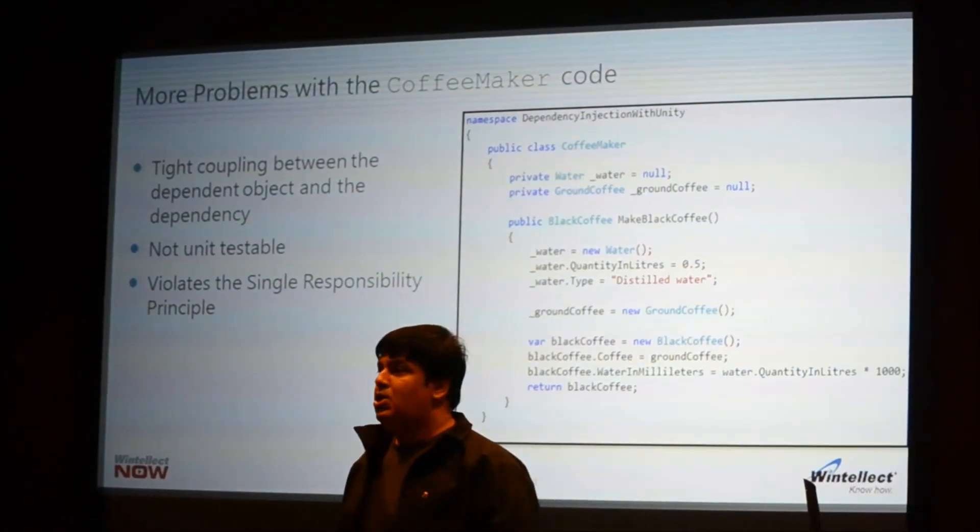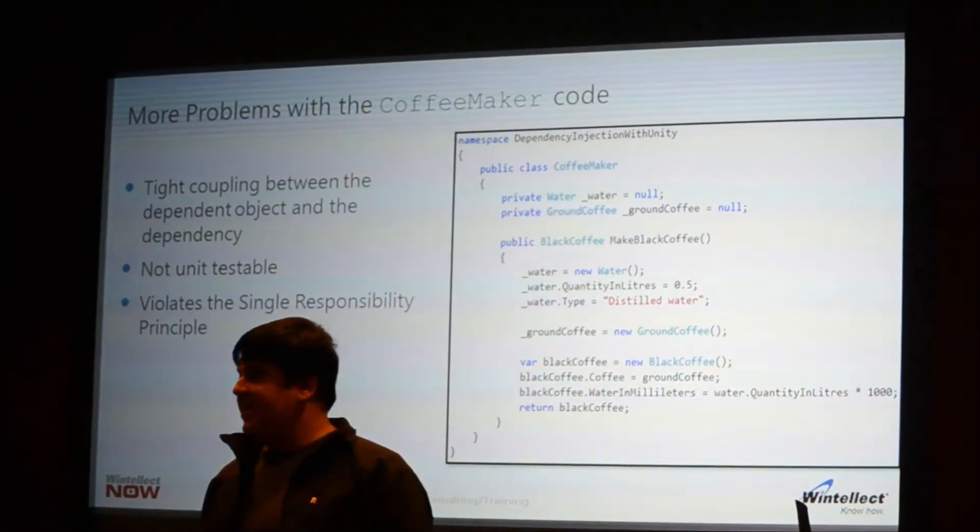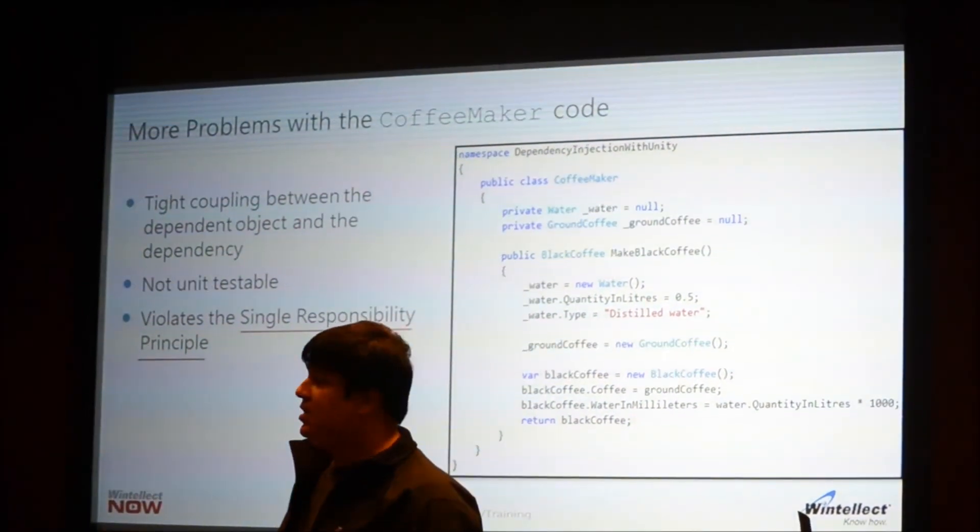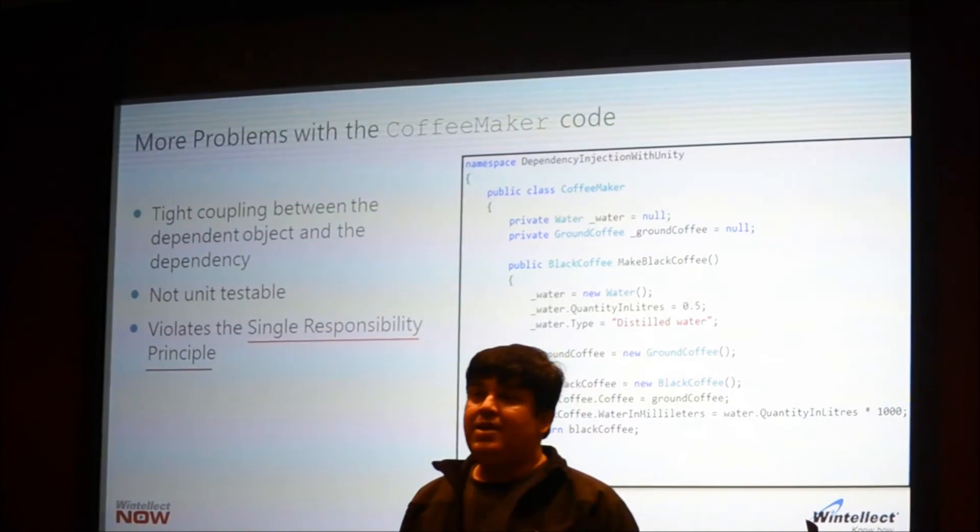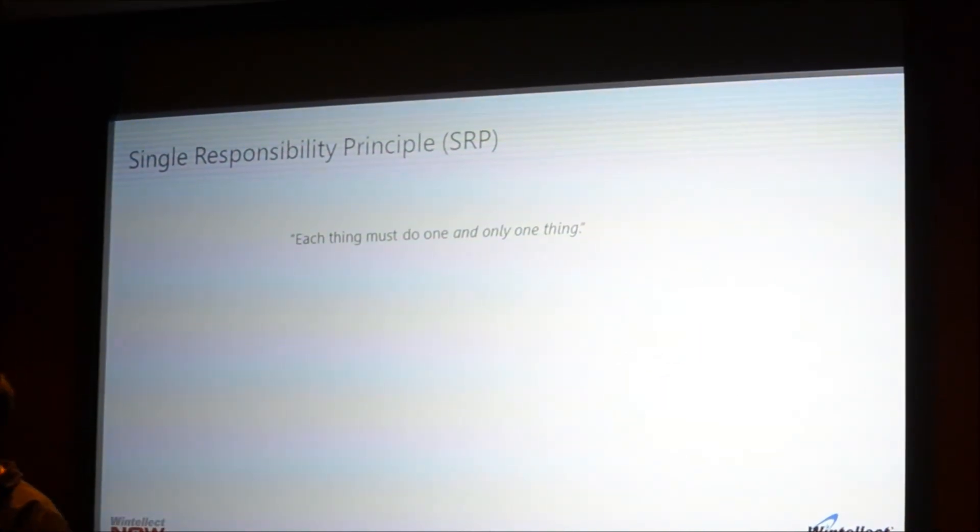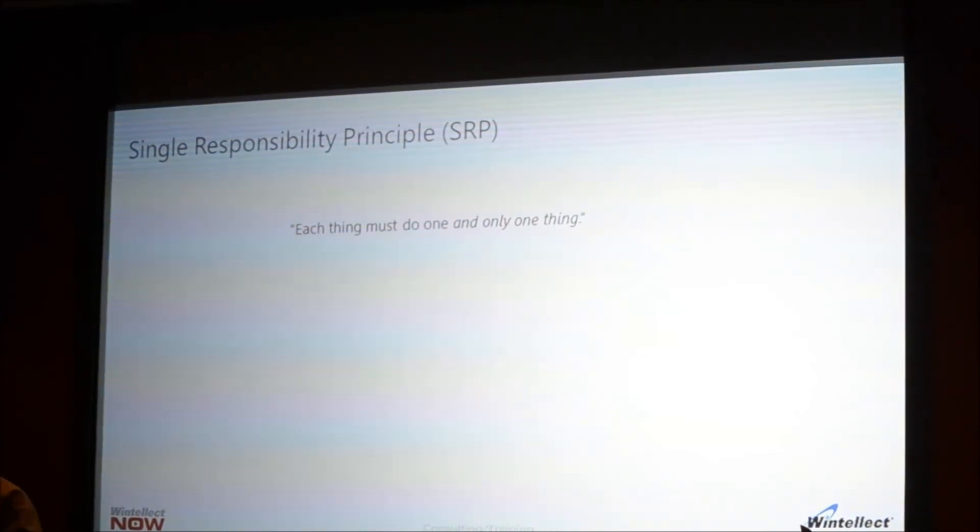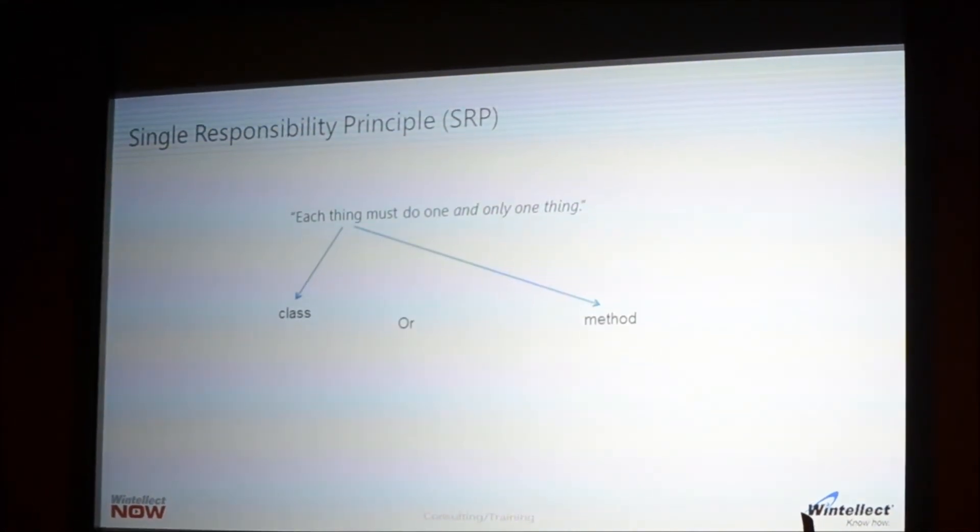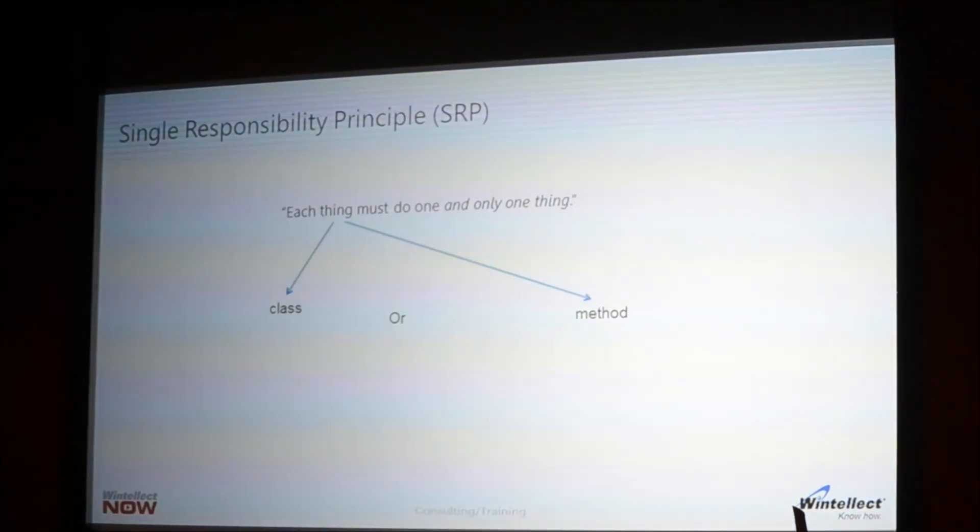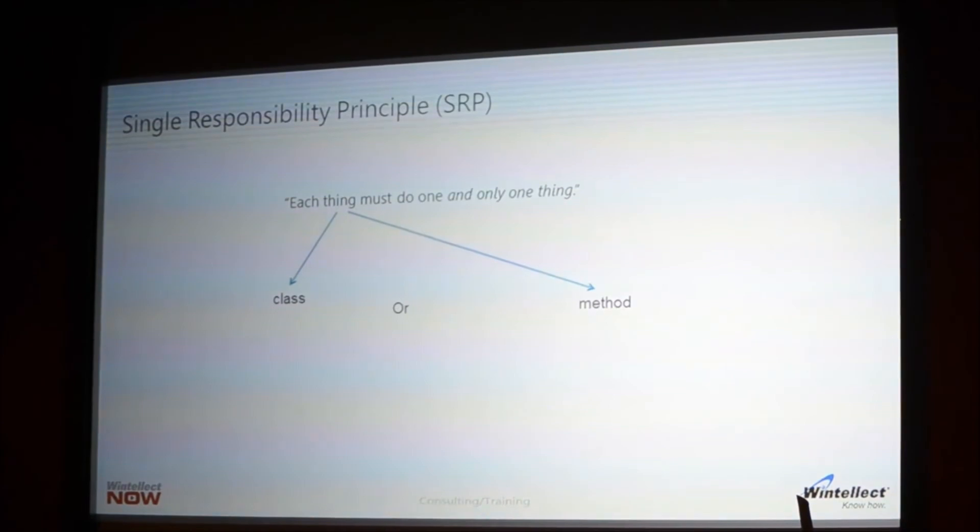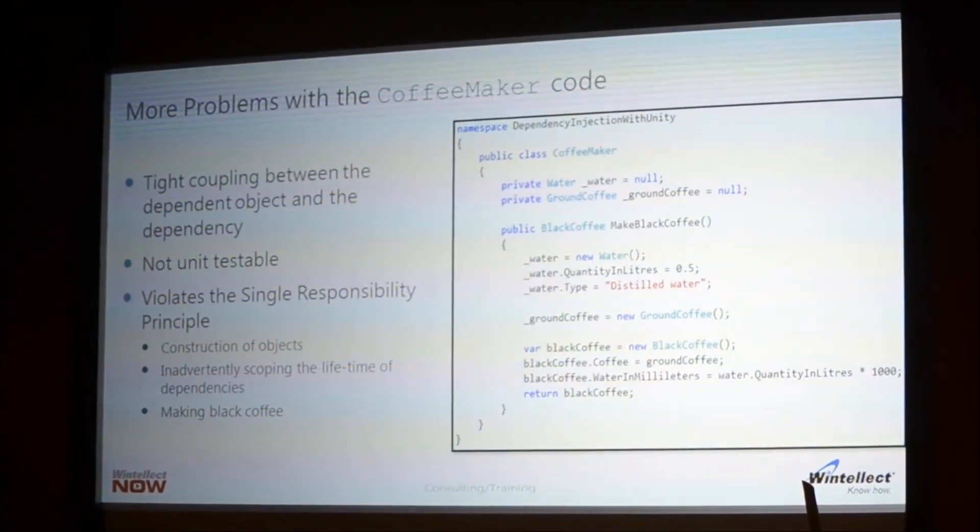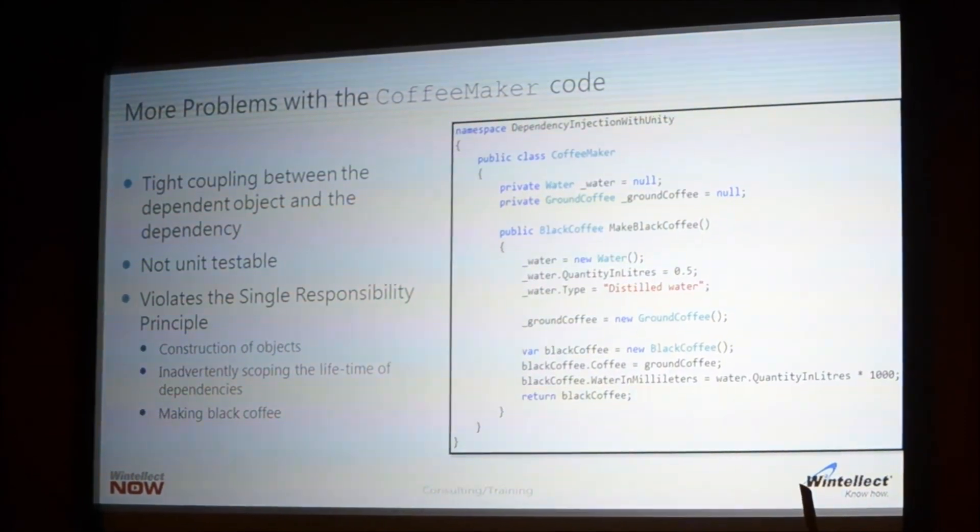This code violates a known principle called the single responsibility principle. And that principle simply states that everything in your code must do just one and only one thing. And by thing, I mean a class or a method you write should just focus on one job. And the job for this coffee maker is really just to make coffee.